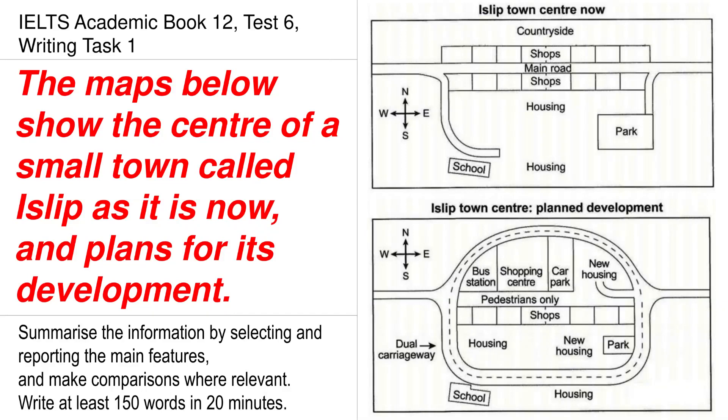Today we are going to discuss the IELTS academic book 12 test 6, the writing task 1. The maps below show the center of a small town called Islip as it is now and the plans for its development. Summarize the information by selecting and reporting the main features and make comparisons where relevant. Write at least 150 words in 20 minutes.